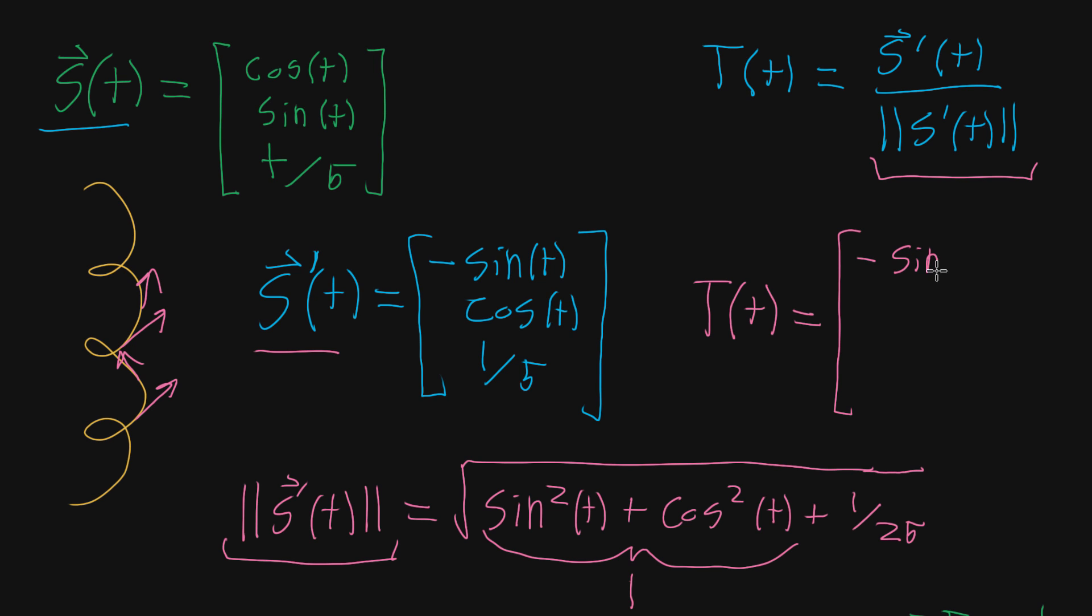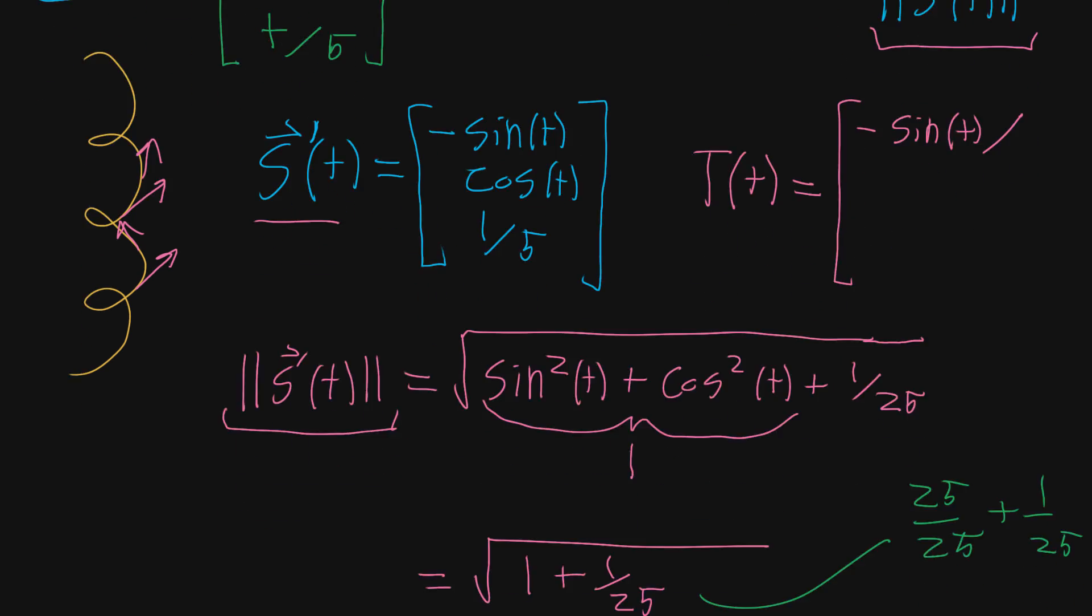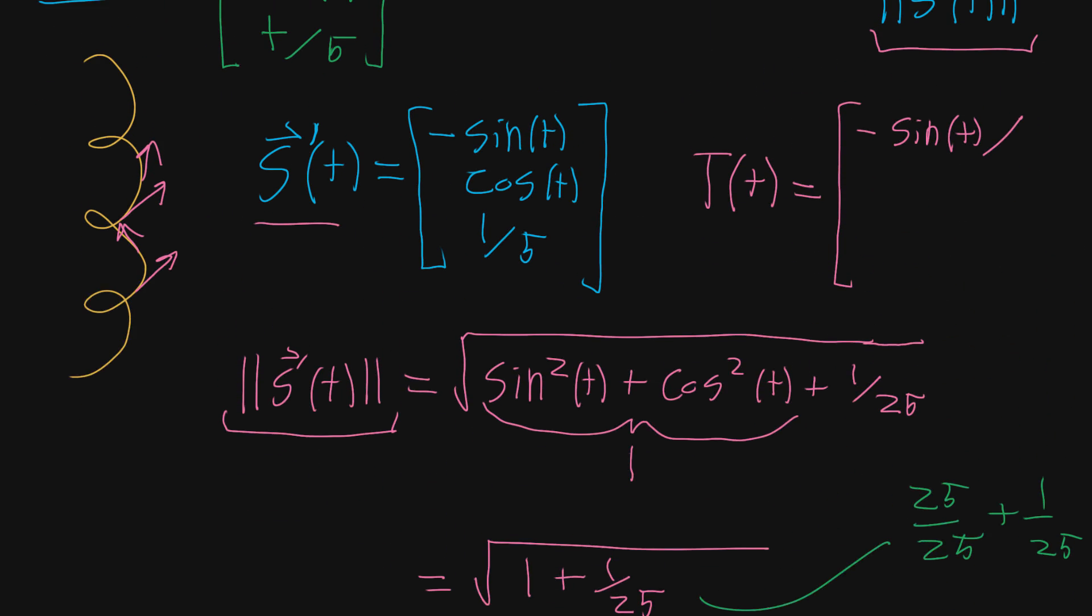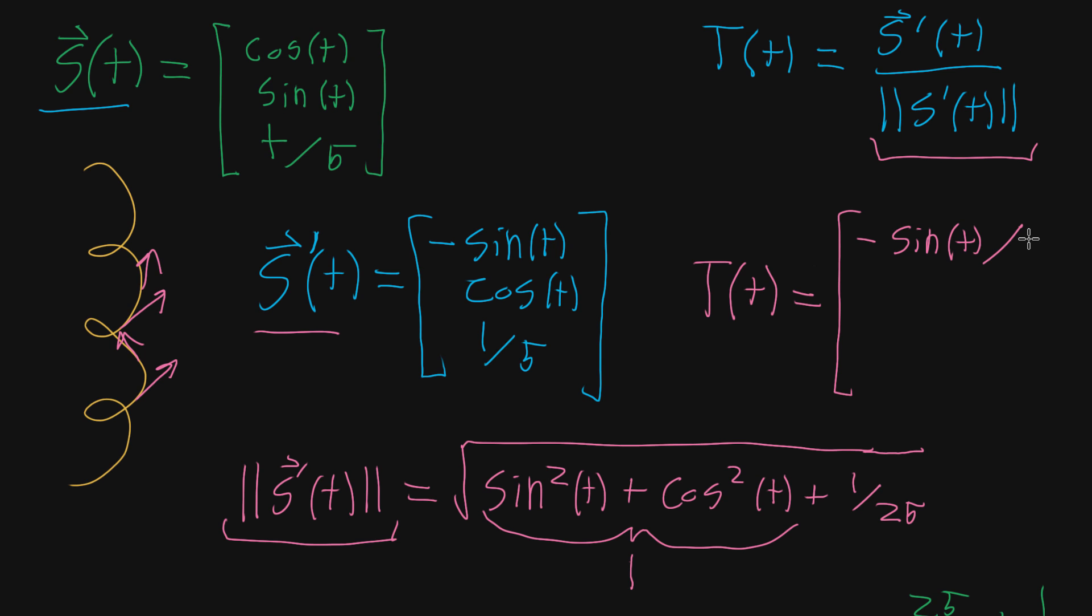It's negative sine of t, except now we're dividing by that magnitude, which is root 26 over 5. So we're dividing by root 26 over 5, that whole quantity. Similarly, the y component is cosine of t divided by the quantity root 26 divided by 5.